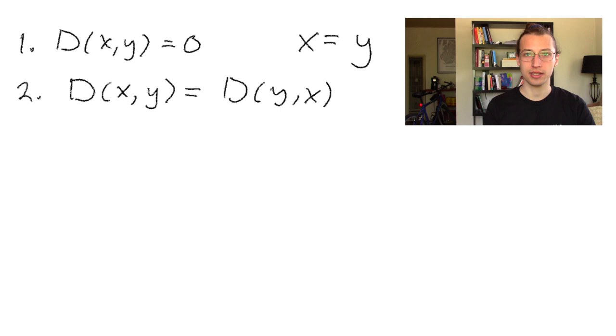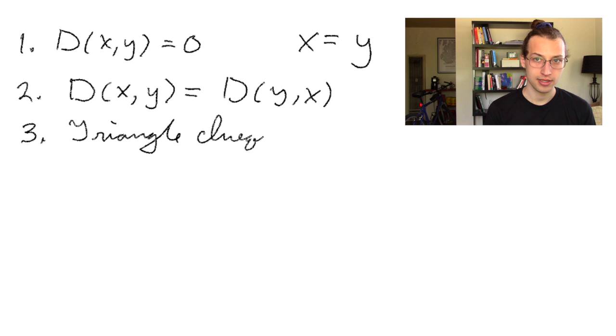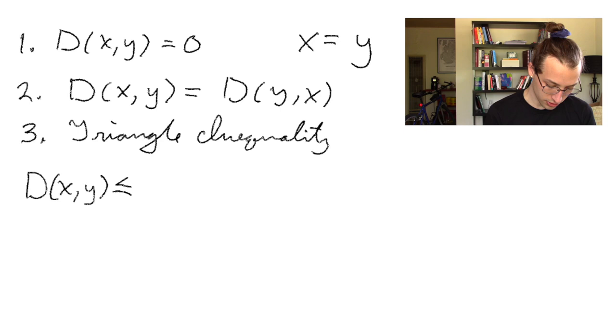And the third requirement is a little more interesting. It's that our metric must satisfy the triangle inequality. The triangle inequality written out is that the distance from x to y must be less than or equal to the distance from x to some number z plus the distance from z to y.